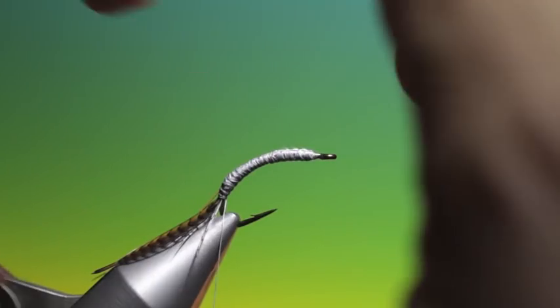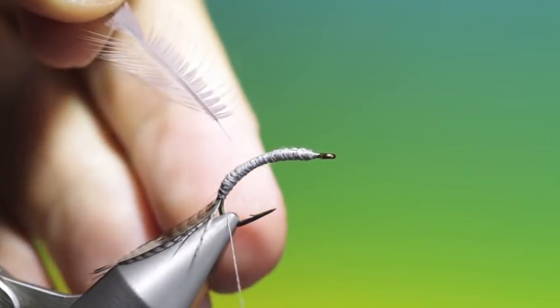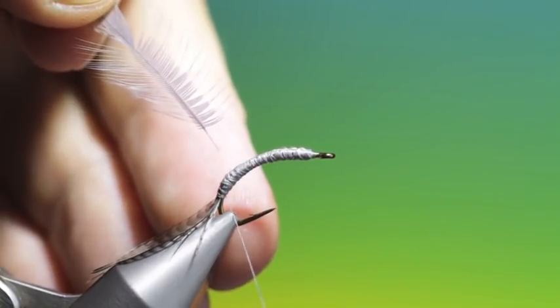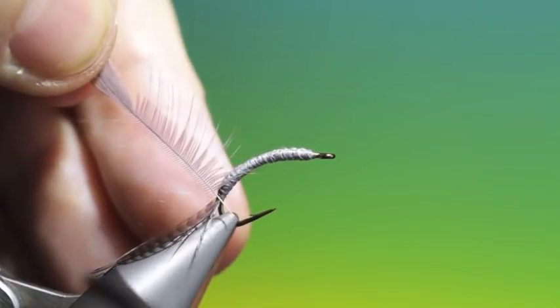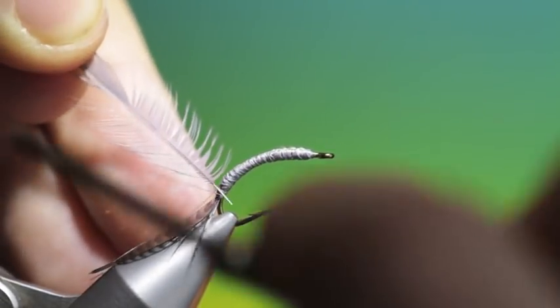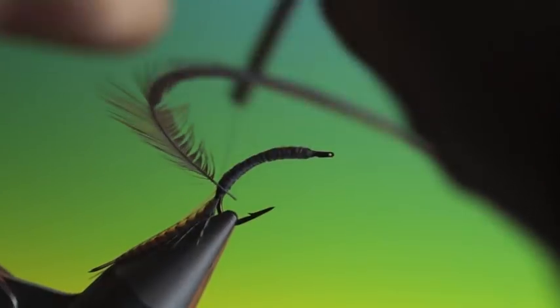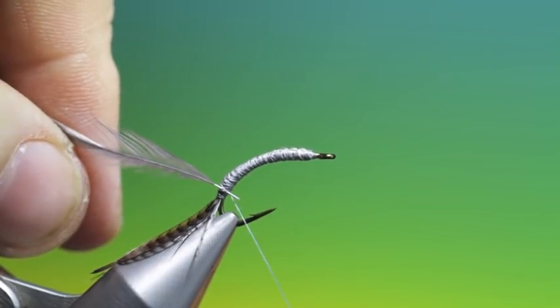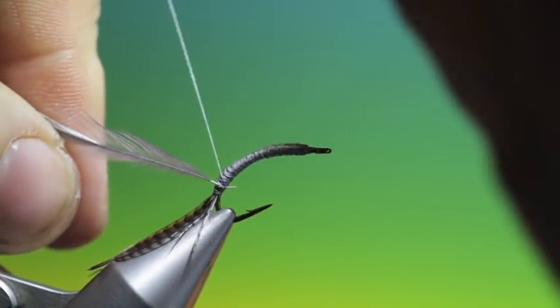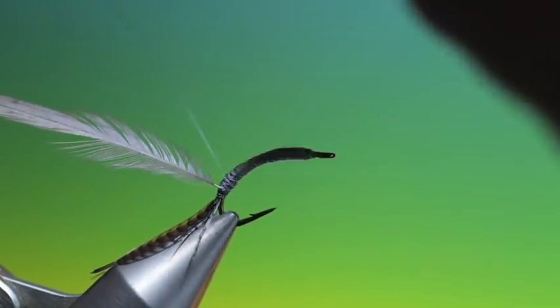Like so. Then I need a, this is a blue dun hackle. Tie this thread up and we'll tie this in. Just at the base like this. Secure the end. Good.